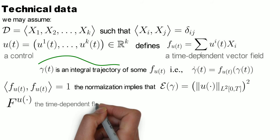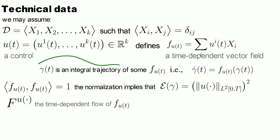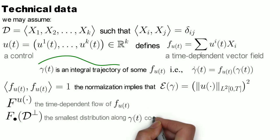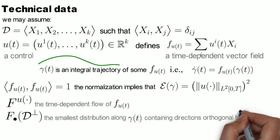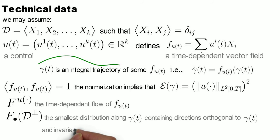By big F we shall denote the time dependent flow of the field F of U, and by F dot of D perpendicular the smallest distribution along gamma which contains the part of D perpendicular to gamma and is invariant by the flow of F.